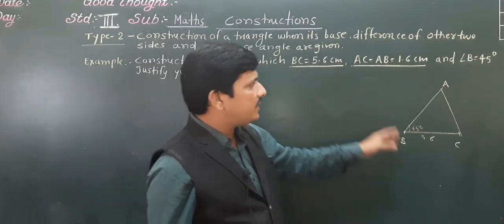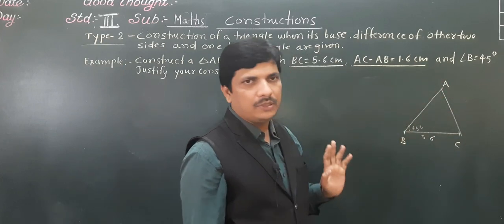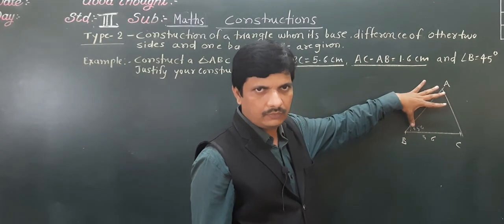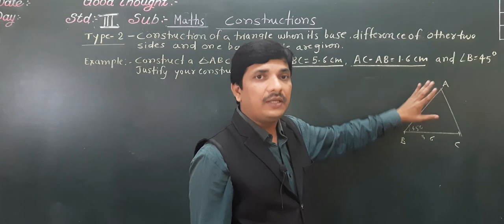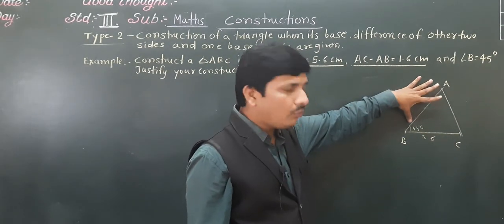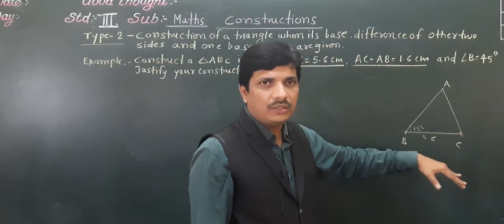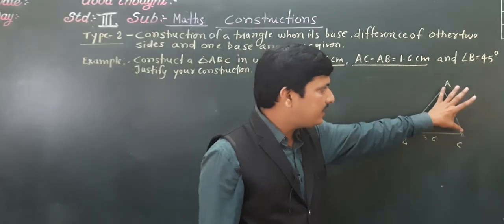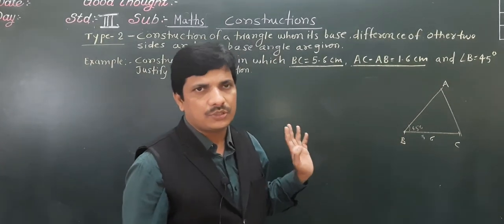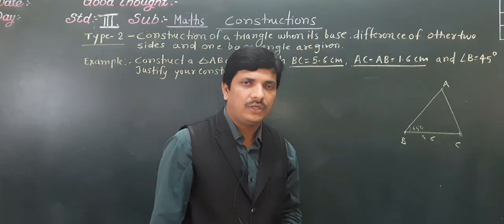Here what is given? AC minus AB. AC minus AB means definitely AC is greater than AB. Yesterday we saw a case where AB was greater than AC. Now here it is completely opposite — AC is greater than AB. So in this type of construction, we need to use some different steps.